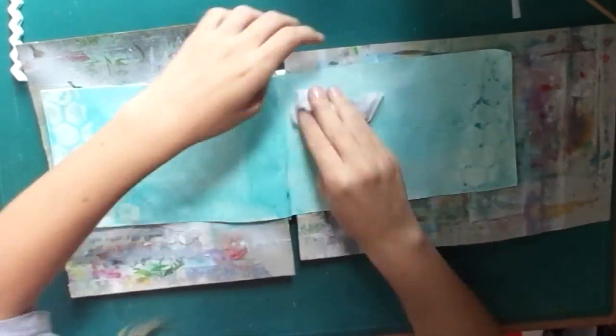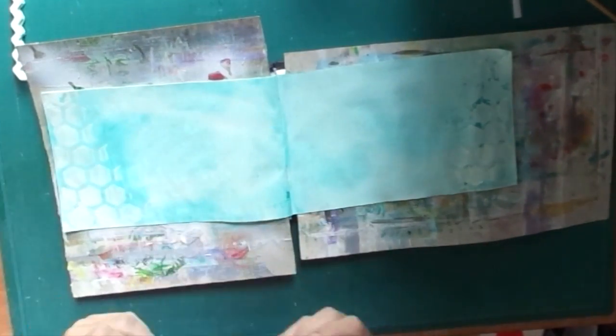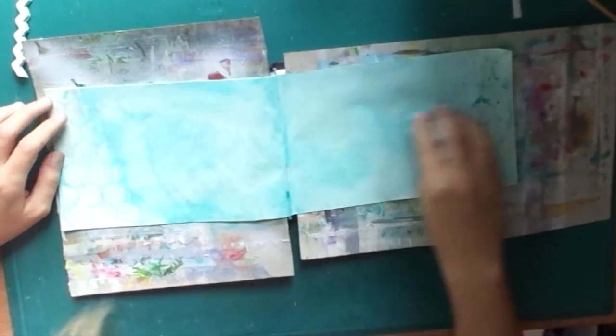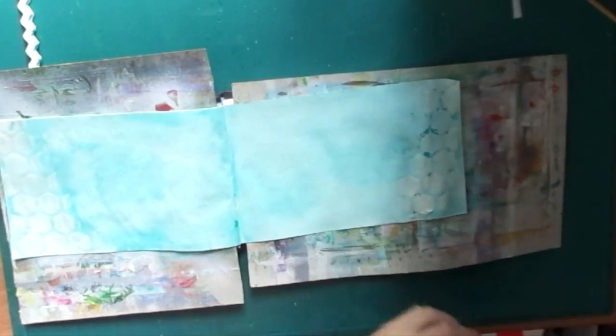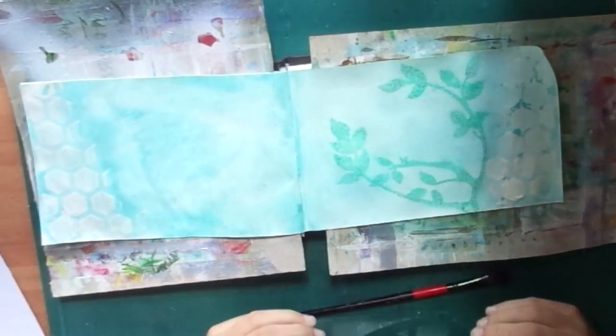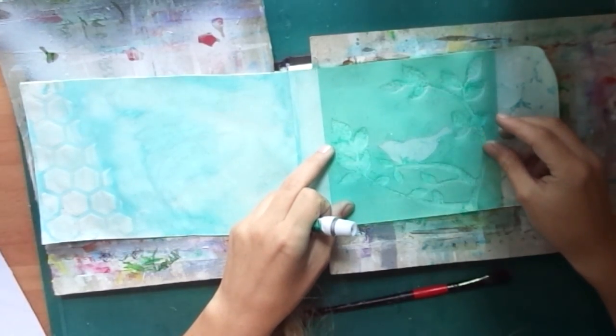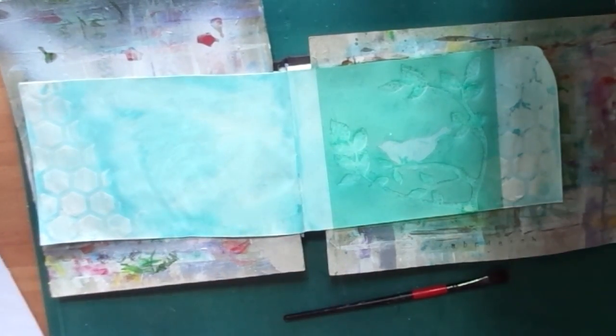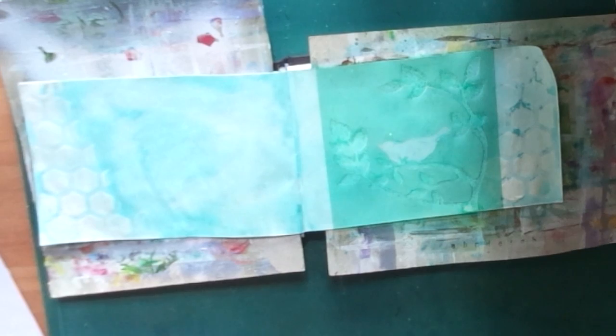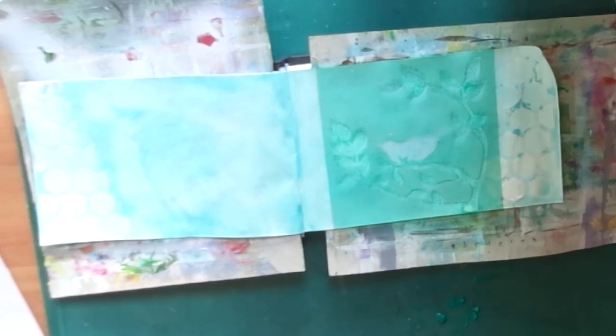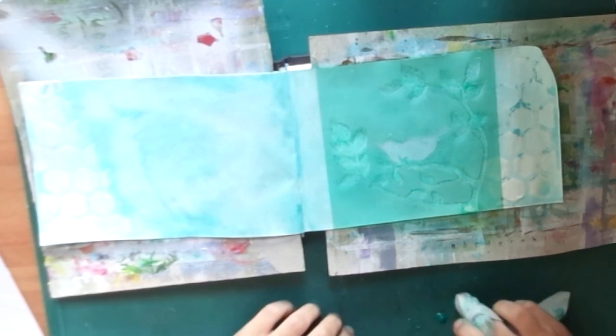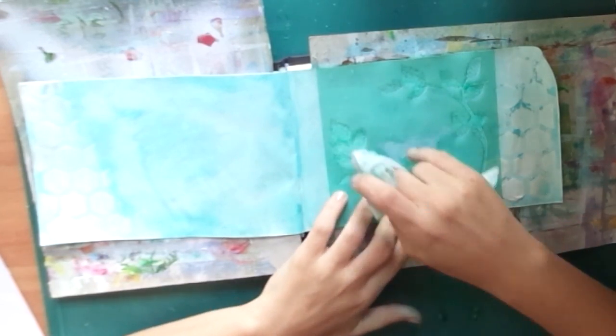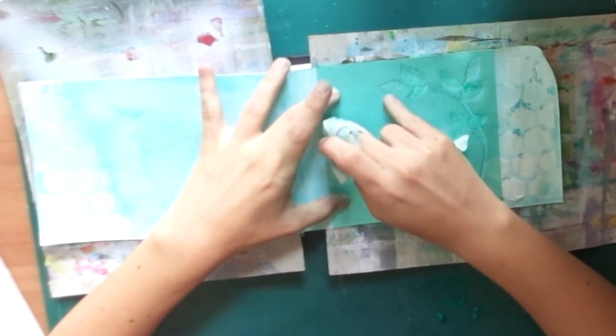After applying the inking spray, I use a stencil with some acrylic paints, because I first used ink sprays but I didn't like the result, so I decided to use acrylic paints instead, and a baby wipe to simply paint a plant using a stencil.